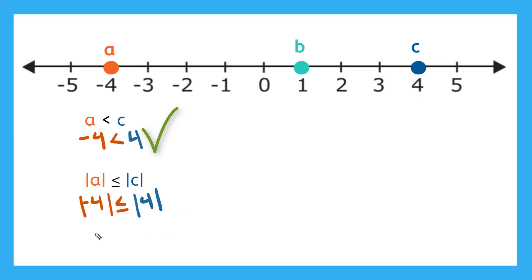So the absolute value of negative four, what's that? The distance to zero would be just four, is less than or equal to the absolute value of positive four, which gives me just four. Now is that true? Is four less than or equal to four? Yeah, that's true. They're equal to each other. So this equal sign right here makes this statement true. Nice work.